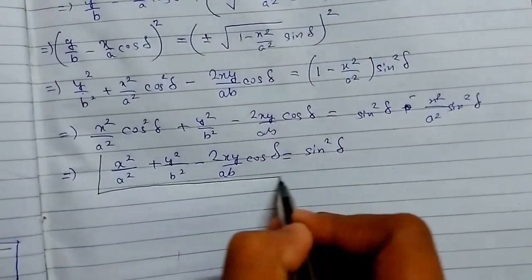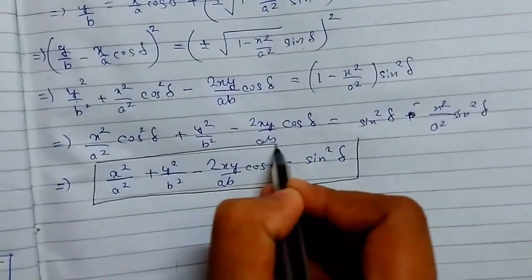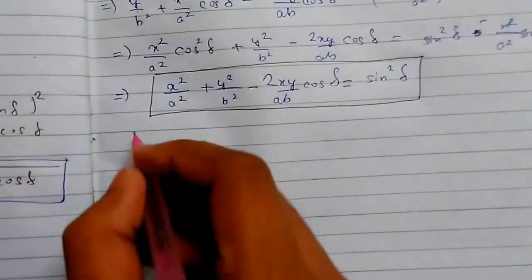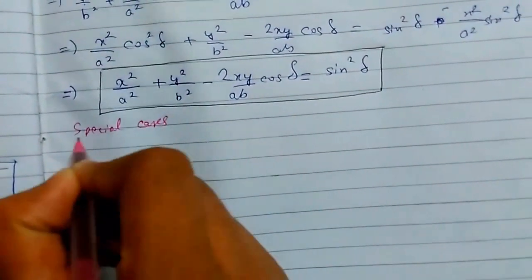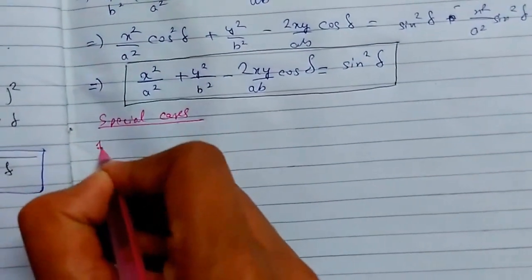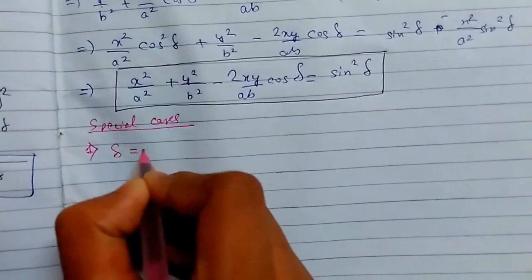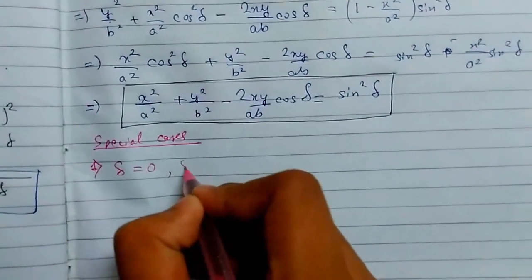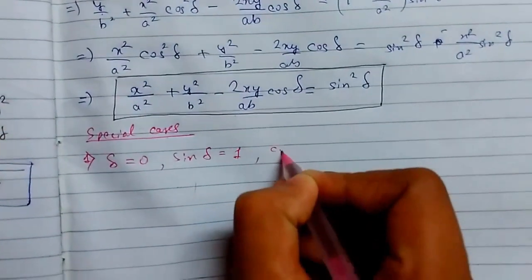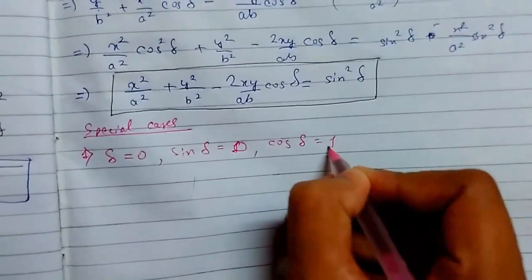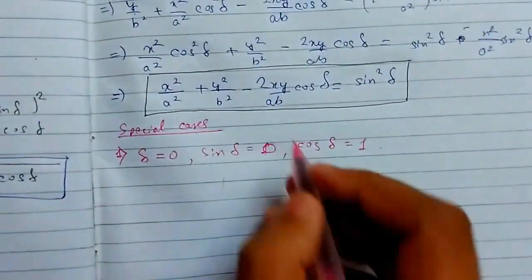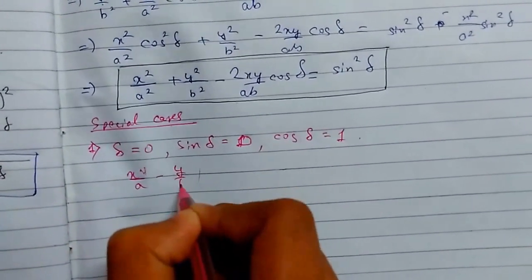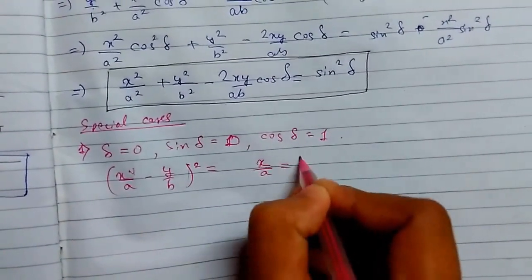Now there are special cases for this. Special case one: when δ equals 0, sin(0) = 0 and cos(0) = 1. The equation becomes (x/a − y/b)² = 0, giving x/a equals y/b, or y equals (b/a)x. This is the equation of a straight line passing through the origin.